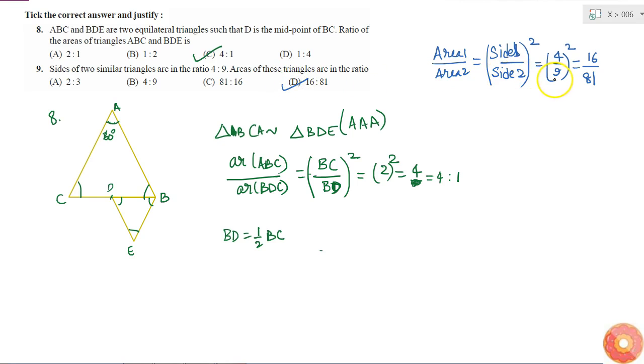You can use this property only if the two triangles are similar. So please be careful about this thing. So if it is given that the triangles are similar, then the answer is D.